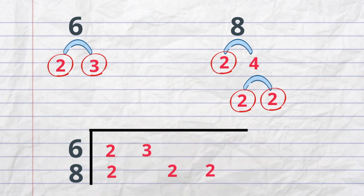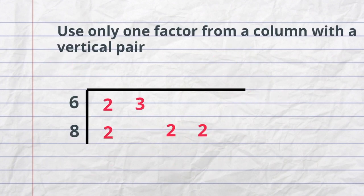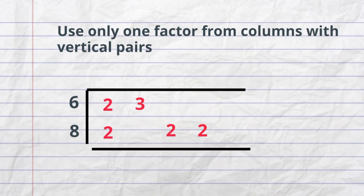I next will use this rule. Use only one factor from a column if you have a vertical pair. So let's put this into practice. Column 1, we have a vertical pair of 2's, so I will bring the 2 down.